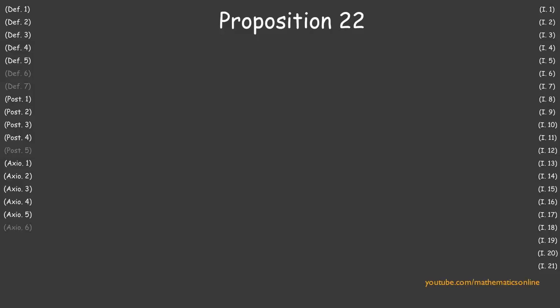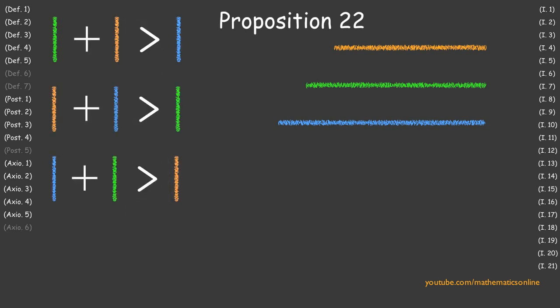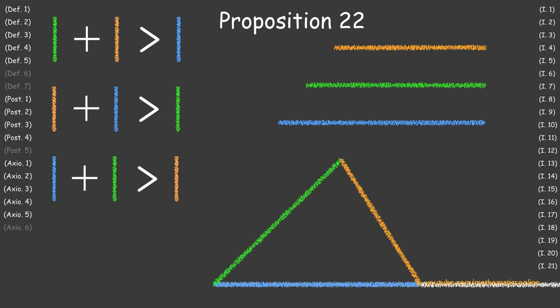In Proposition 22, we proved that with any three lines that satisfy the conditions of Proposition 20, then on any line of arbitrary length, we can always construct a triangle with its sides congruent to the three given lines.